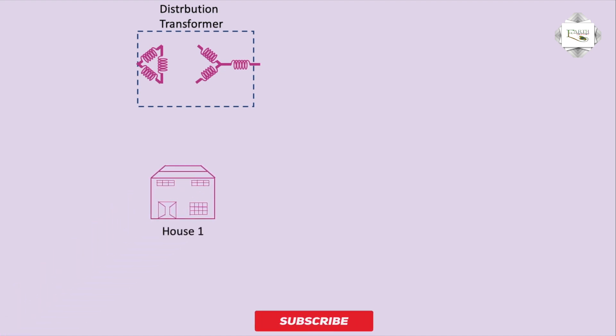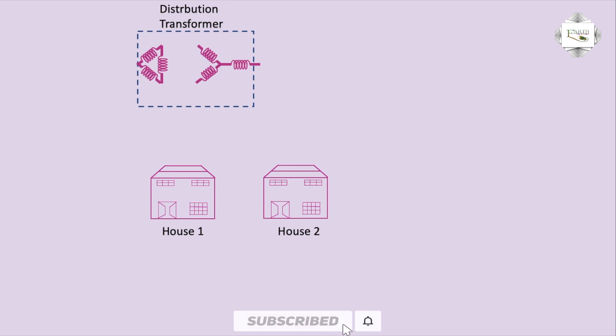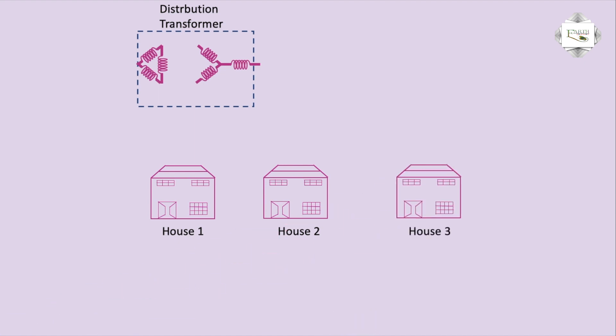The distribution goes to house number one, house number two, and house number three via three-phase line. The connection types are six-connection, nine-connection, twelve-connection, and eleven-connection — all using the same three-phase line for single-phase outlets. Three-phase factory load connection uses Red, Yellow, Blue, and neutral.